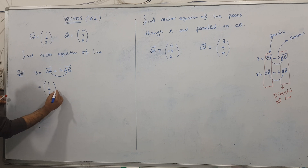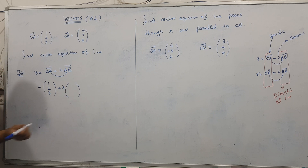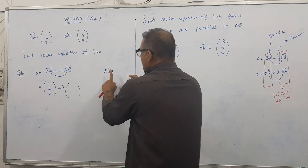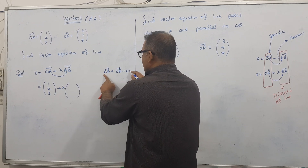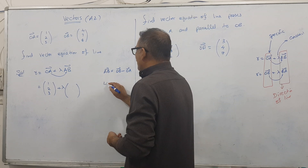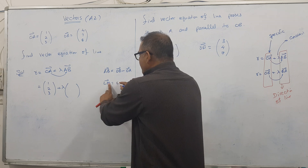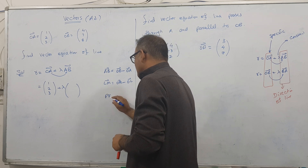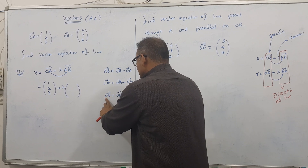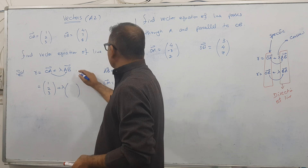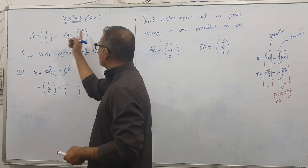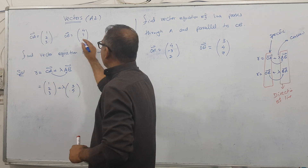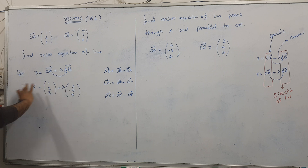OA is (1, 2, 3), plus lambda times AB. To find AB, you use OB minus OA — this is the rule for finding a vector, which you've done in 11th grade. So AB = (4−1, 7−2, 8−3) = (3, 5, 5). So this is the vector equation of the line.